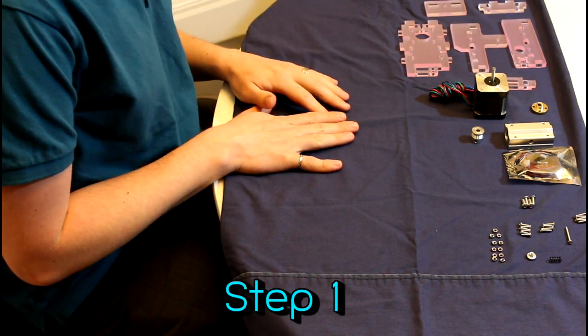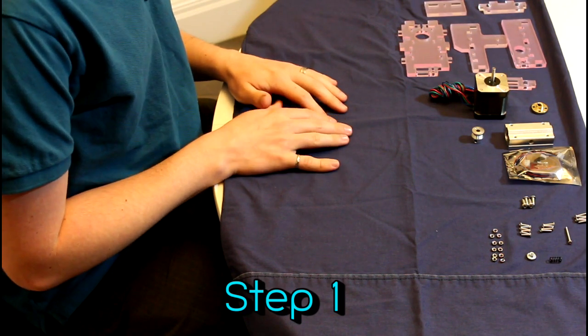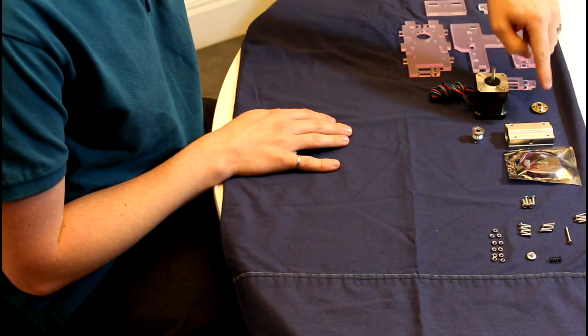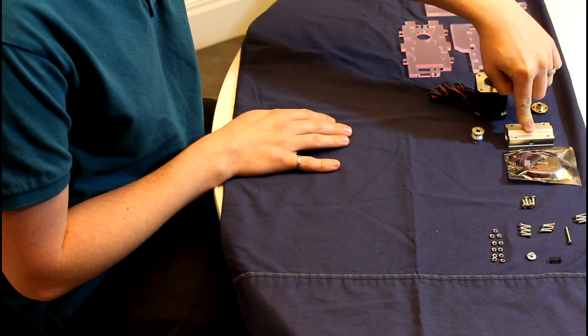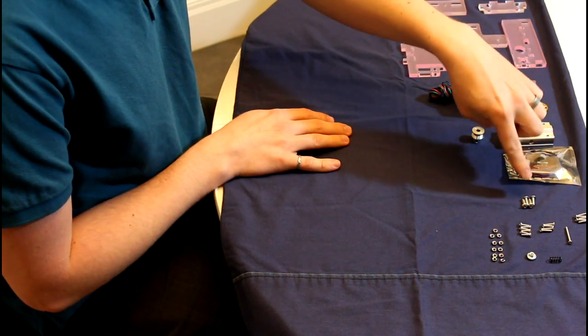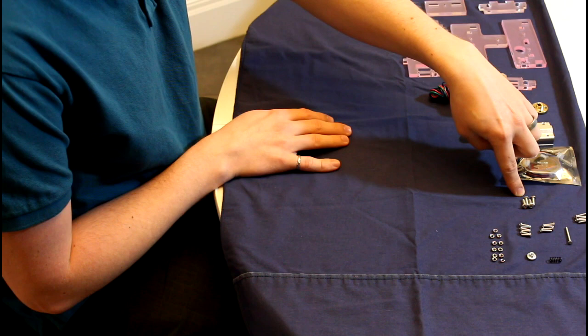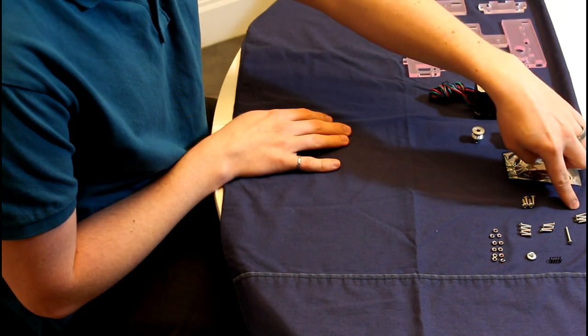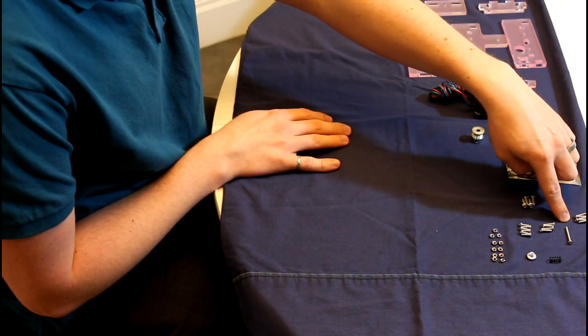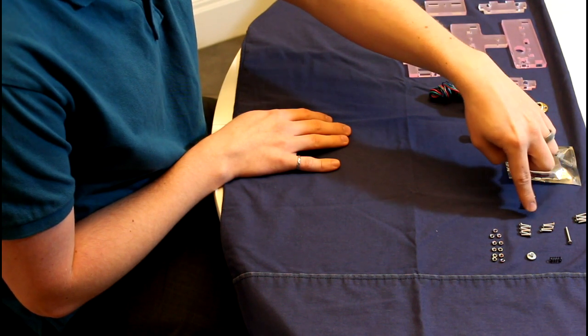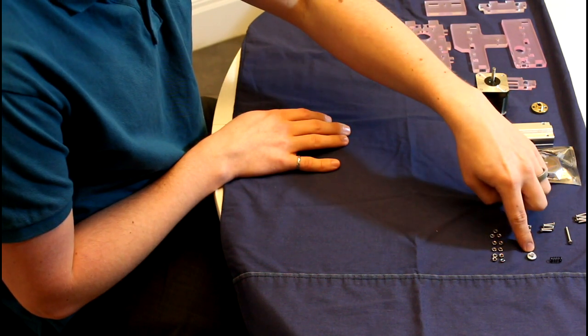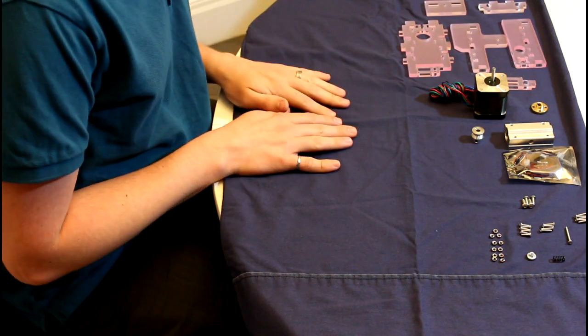So this is step one of assembling the Sun Hokey Prusa i3. For step one, we have six acrylic parts, one stepper motor, one T8 lead screw, one long slider box or box slider, one T2.5 pulley, one end stop, four M4 by 12 screws, four M3 by 16 screws, one M3 by 25 screw, four M3 by 12 screws, four M3 by 10 screws, 11 M3 nuts, one flange nut, and one black spring. So, let's get started.